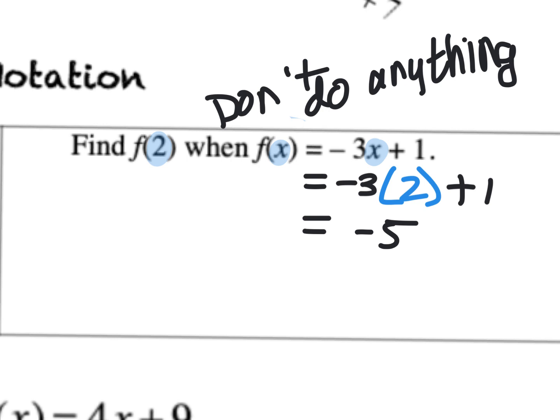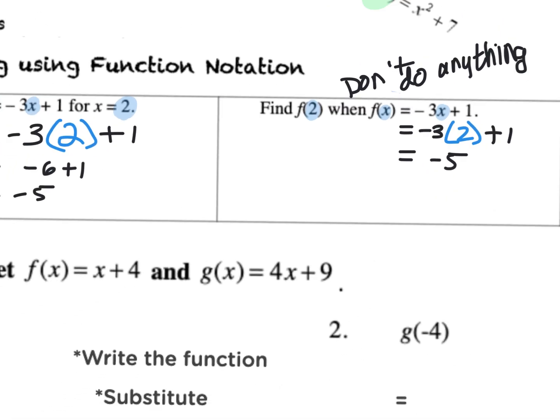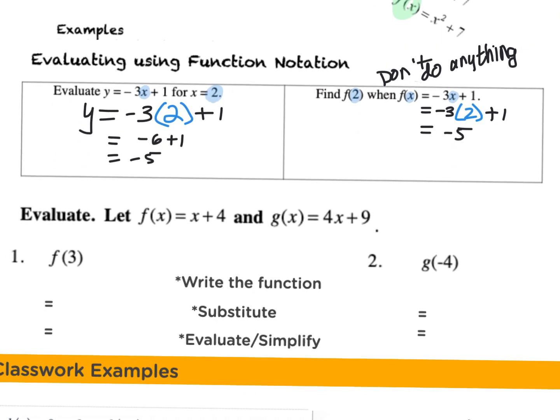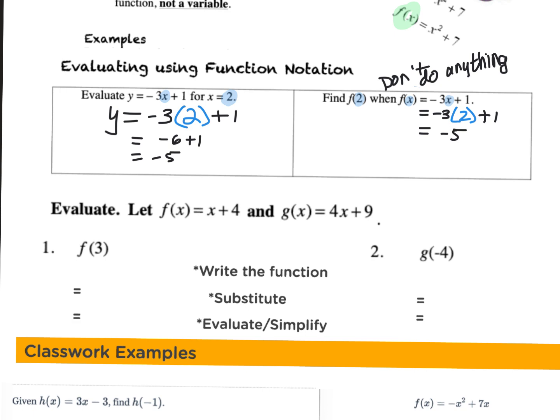On your classwork for today, on your delta math, there are two different types of questions that you will see. I wrote you a little step-by-step. All your problems are going to look exactly like these examples here. Notice how this one says f of x and that one says g of x - that's how you know which problem to do with which. I'll zoom in on this one first.